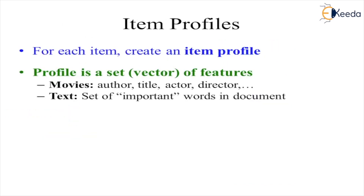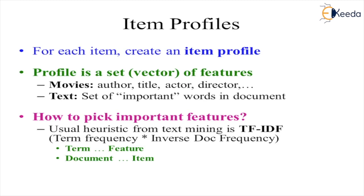For each item, we create an item profile — a profile is a set of features. Movies consist of features like author, title, actor, director, and genre. Text may consist of a set of important words in the document. To pick important features, a useful heuristic from text mining is TF-IDF — term frequency and inverse document frequency — where terms are features and documents are items.